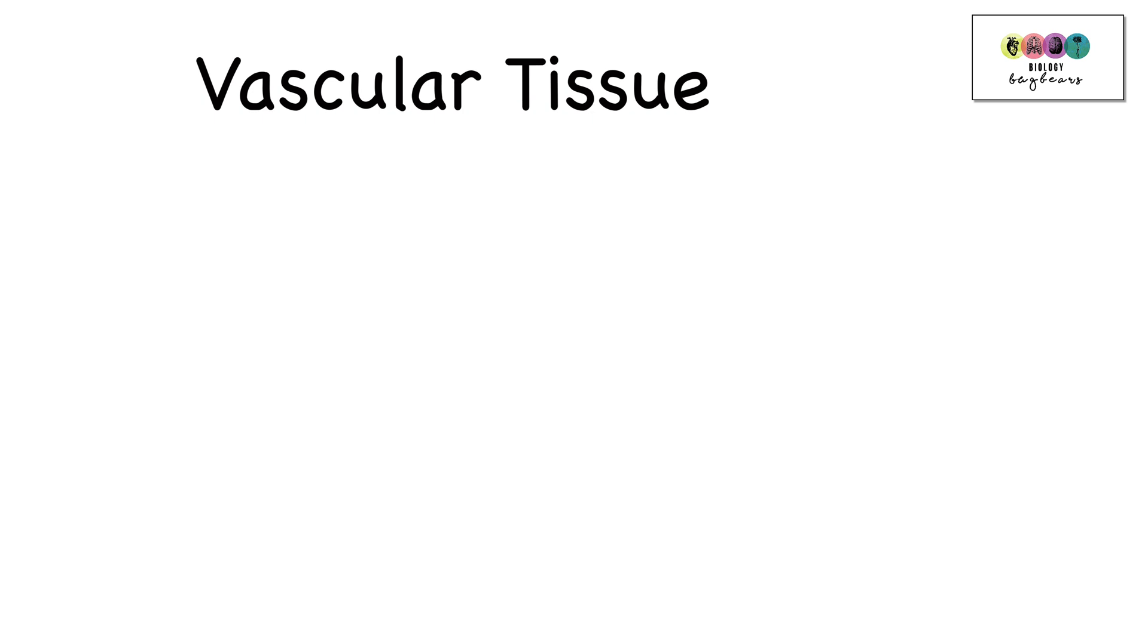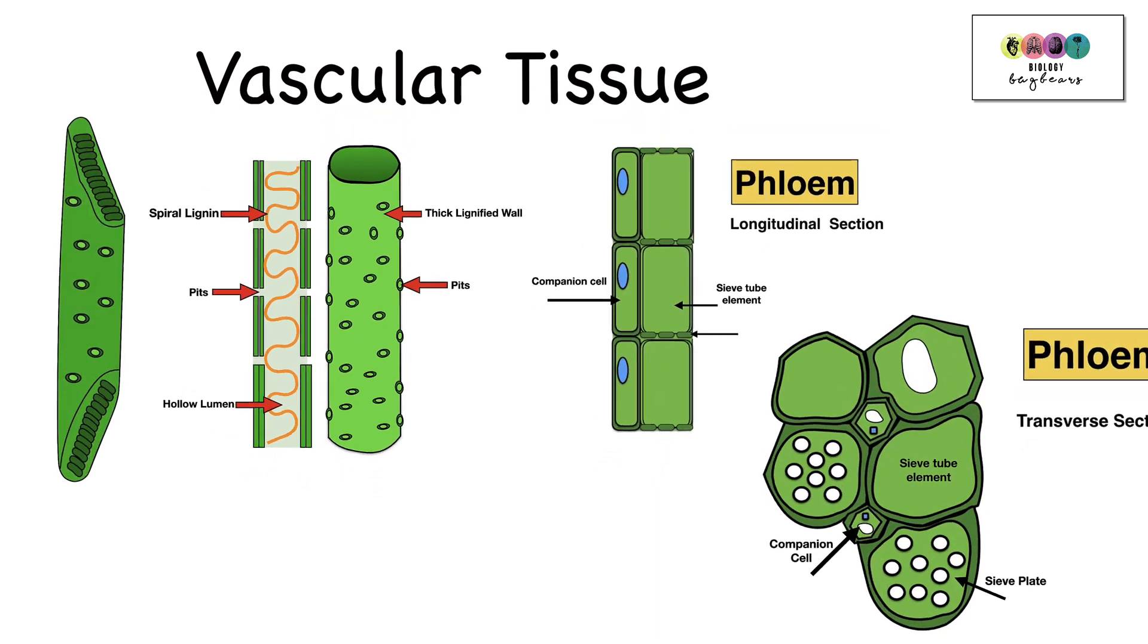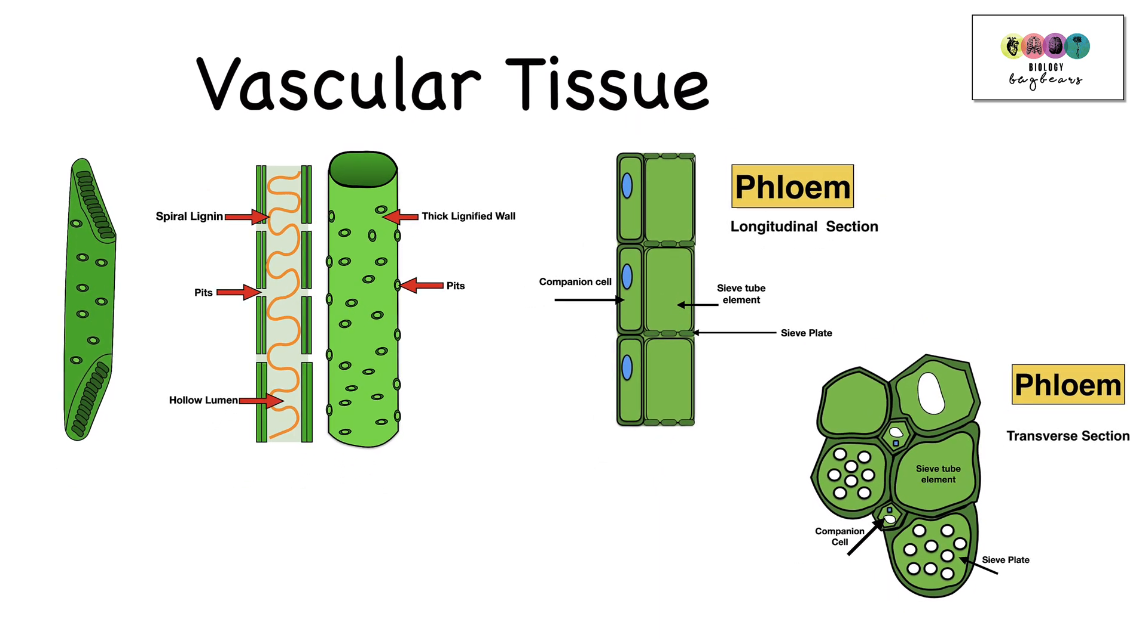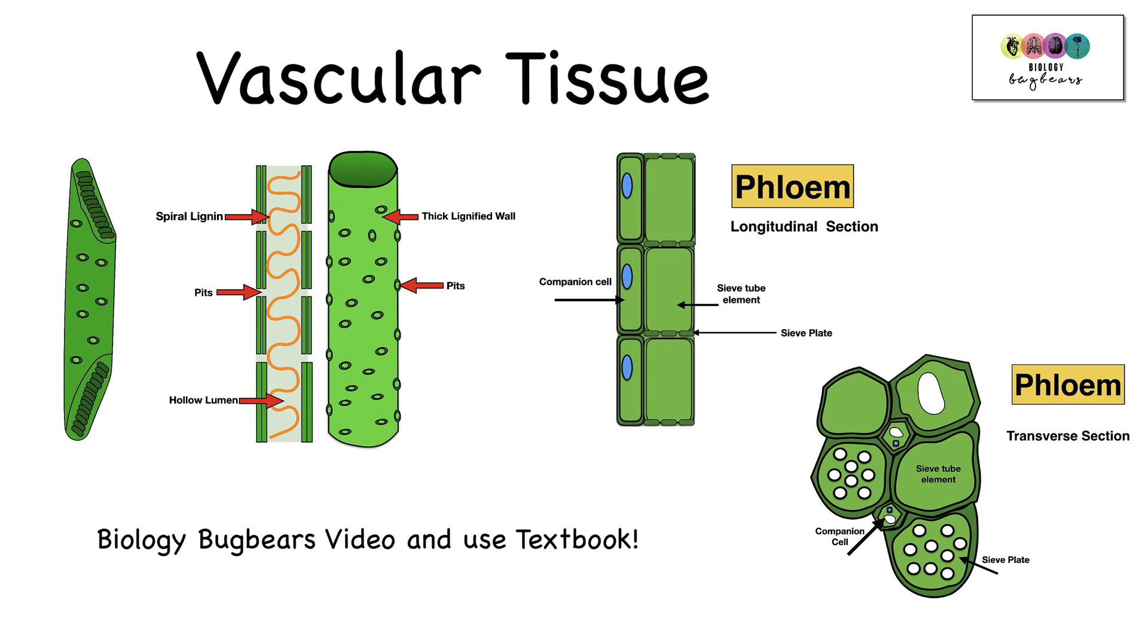You cannot study plant structure or plant transport without knowing in detail the vascular tissue. You have to be able to draw xylem tracheids and vessels and label them in detail. The same goes for phloem, the longitudinal section and the transverse section. Be able to identify them both from photographs. It's really important and there is a separate video on this and also your textbook, so spend time on these diagrams because one of them, I bet, would be on your paper.